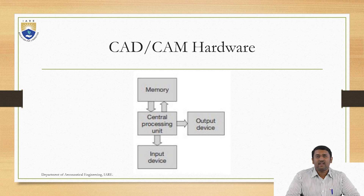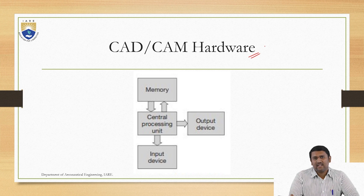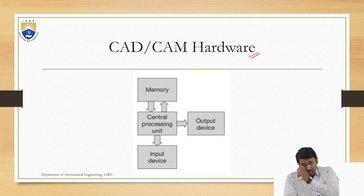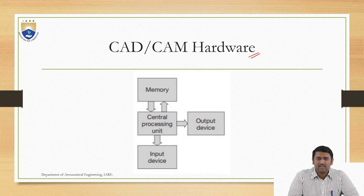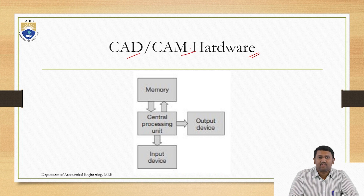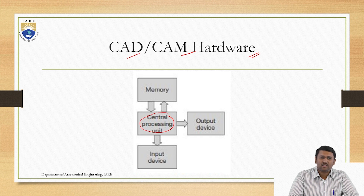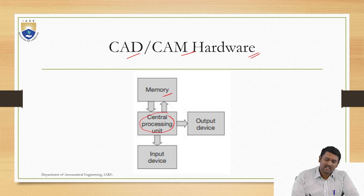We will be continuing on our next topic, which is CAD-CAM hardware. Earlier, what we discussed is what will the computers be available for — what kind of processes. Now, in order to get our things right, we will be discussing how well the hardware is available. For any computer hardware, as in the instance of CAD or CAM, you will be having a central processing unit which processes the data coming from or being taken back from the memory, to give a certain output in accordance to the input.